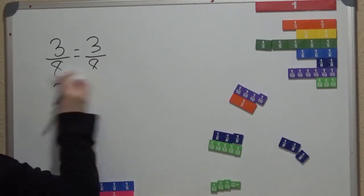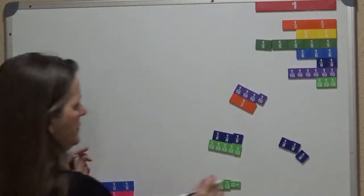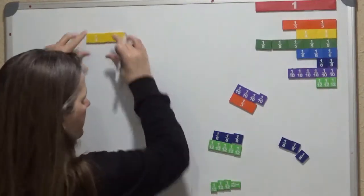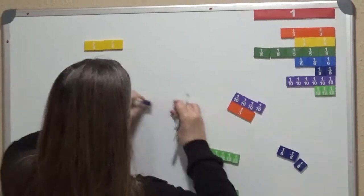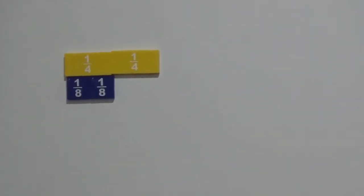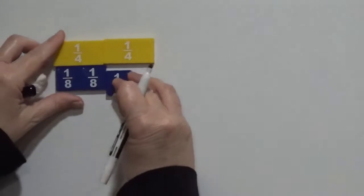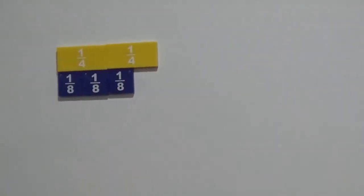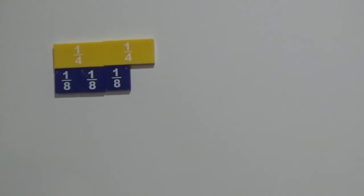So let's go ahead and visually look at that. 2 fourths, and we can visually see that 2 fourths is larger than 3 out of 8.